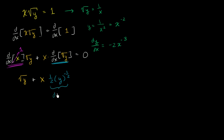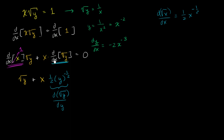We've seen this multiple times. If I were to say the derivative of the square root of x with respect to x, you would get 1/2 x to the negative 1/2. Now I'm just doing it with y's. But remember, our derivative operator is with respect to x, not y. So we have to multiply that times the derivative of y with respect to x to get the full chain rule — the derivative of sqrt(y) with respect to y, times dy/dx.